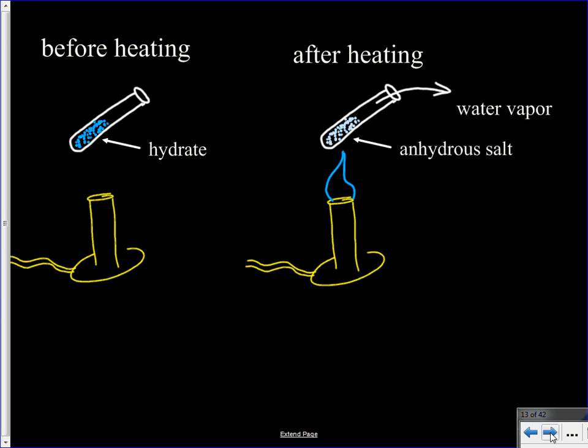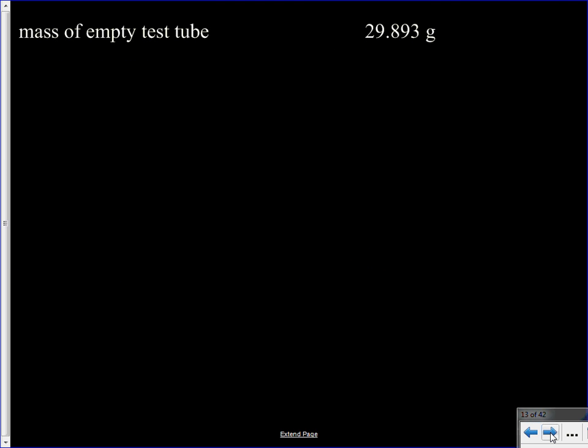So as we do this, some of the data that we will be collecting is we will need to know the mass of the empty test tube before we even start, and I've got just some sample data to go along here. So we have the mass of that empty test tube. Then we will put our hydrate, our copper sulfate hydrate, into the test tube and we will get the mass of the test tube with the salt in it before we heat it up.